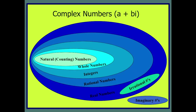So abhi tak humnay dekha ke we have natural, ya joh humare counting numbers hain. Agar us ke saath hum zero ka ezaafah kar tehen to we have whole numbers. These are all positive numbers. Agar us me negative numbers add kar tehen to they become integers.